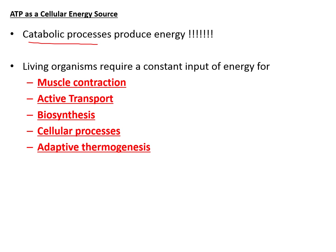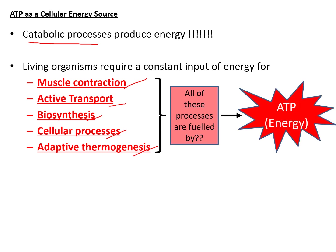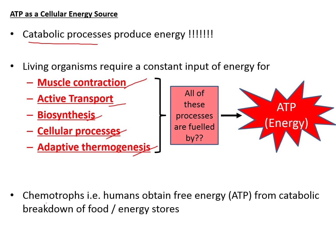We need energy for a number of reasons such as muscle contraction that allows movement, active transport of molecules and ions across the plasma membrane, biosynthesis of macromolecules like proteins and fats, cellular processes such as DNA replication, and adaptive thermogenesis — the generation of body heat by warm-blooded animals. These activities are all fueled by ATP molecules, and therefore we are all chemotrophs because we obtain energy from chemical reactions, specifically from the catabolic breakdown of food molecules.